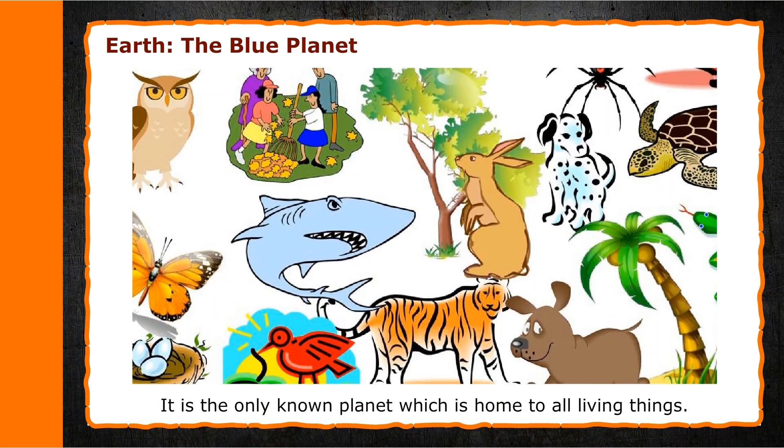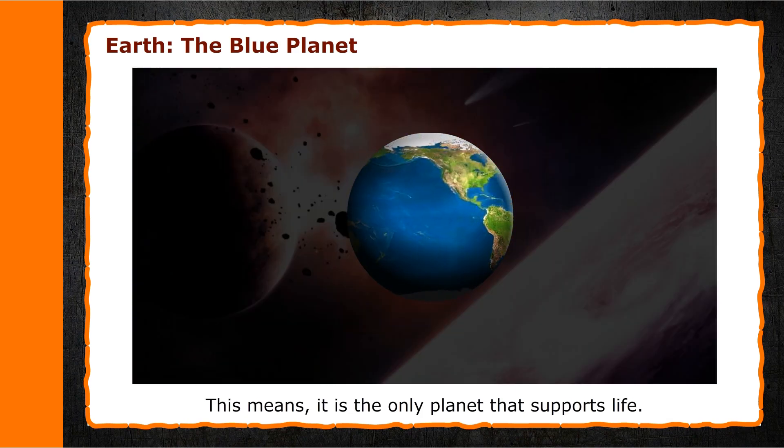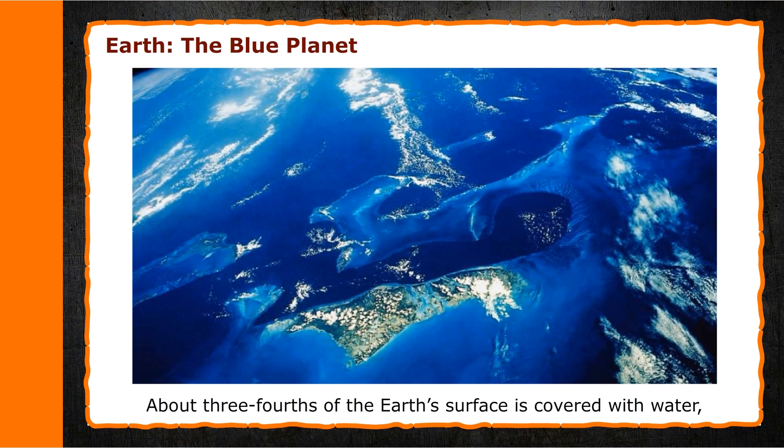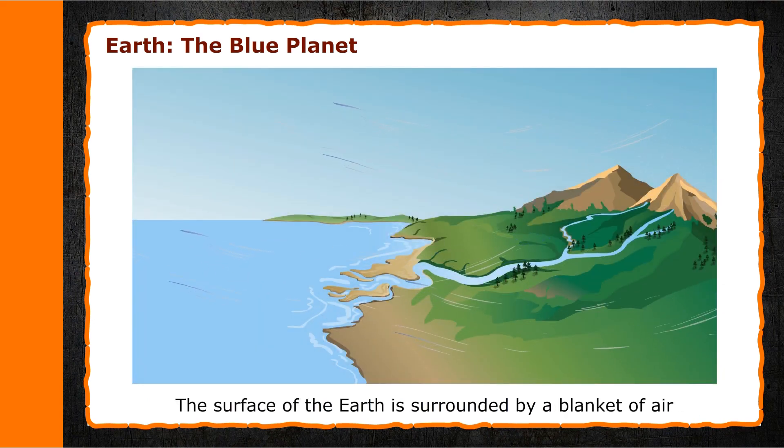About three-fourths of the Earth's surface is covered with water and one-fourth by land. The surface of the Earth is surrounded by a blanket of air called the atmosphere.